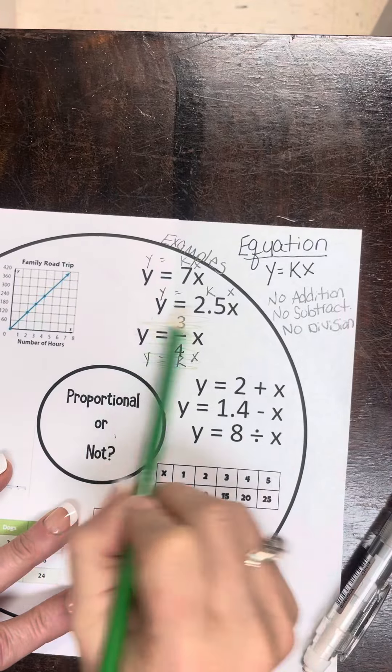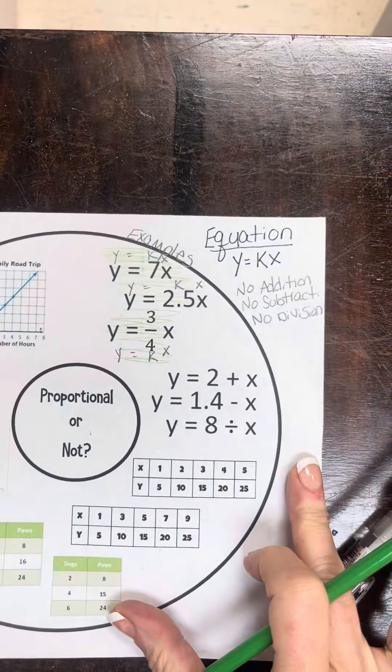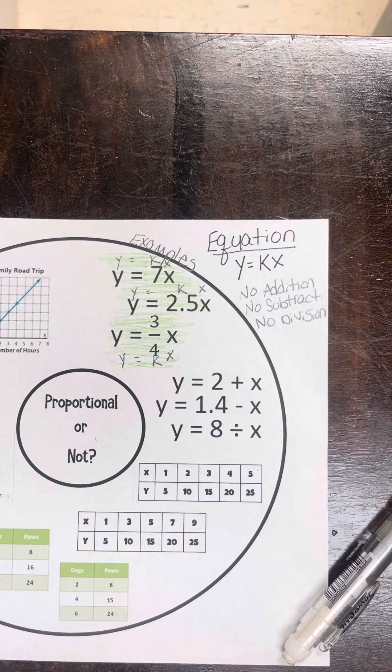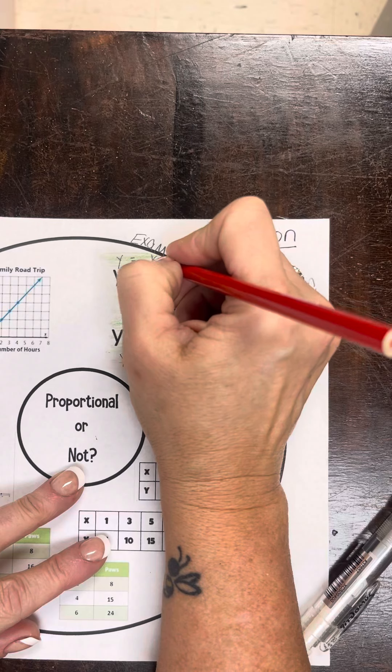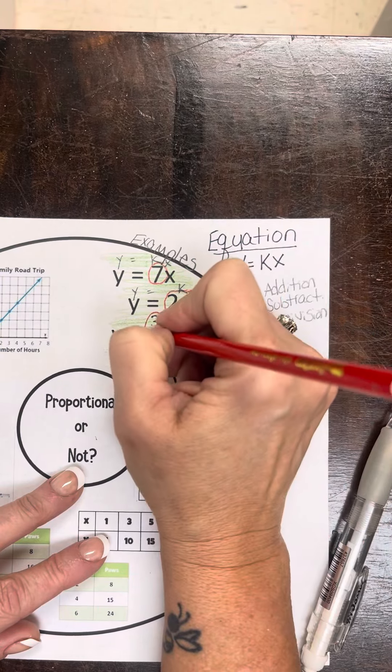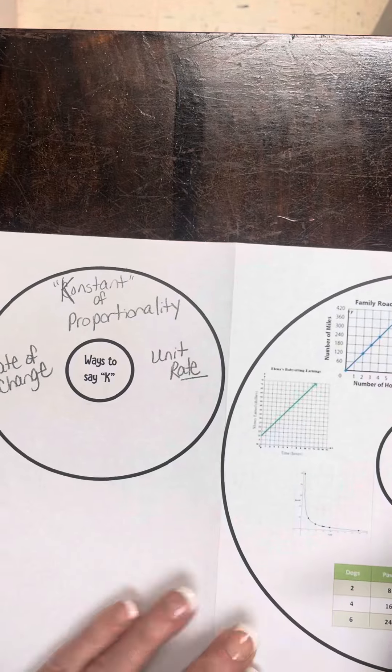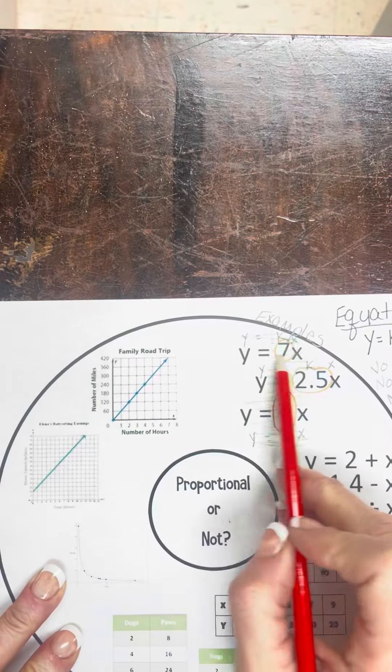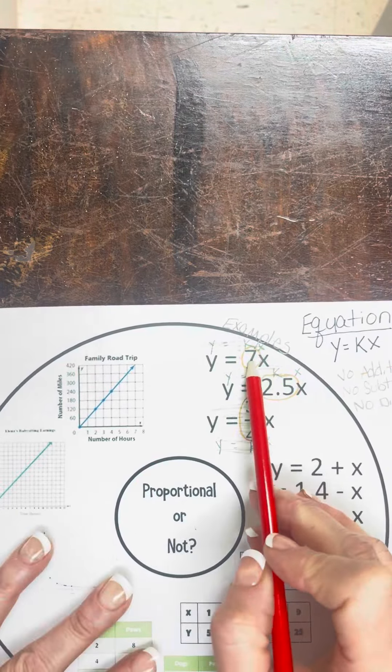I'm going to shade those green as examples. Now let's go ahead and identify k — we're going to circle k in that equation. If it asks me for k, it's right here. k is that 7, so k equals 7. In this one, k equals 2.5. In this one, k equals three-fourths. That means the unit rate is 7, the rate of change is 7, the constant of proportionality is 7. Right here the unit rate is 2.5; right here the unit rate is three-fourths.